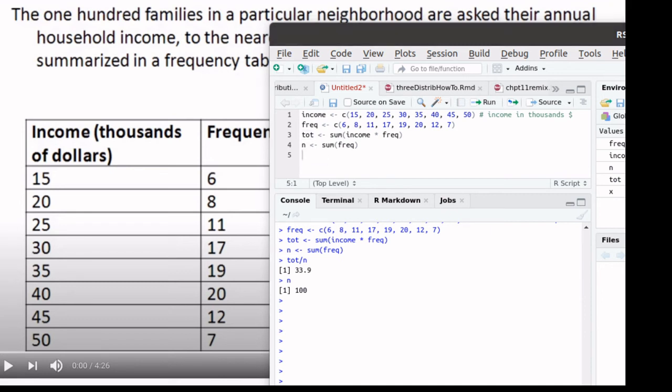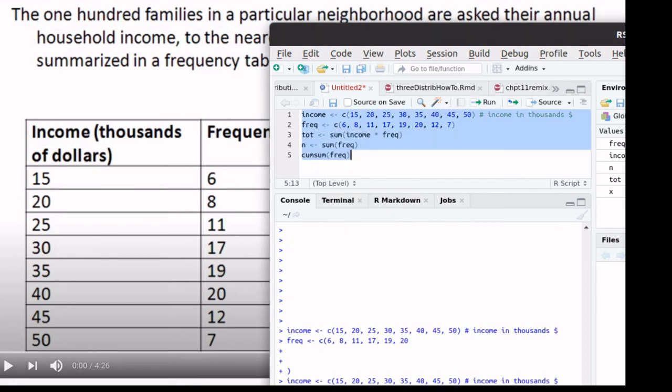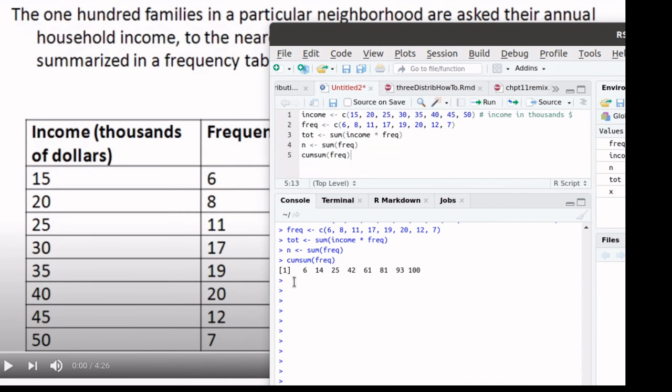Because R has a nice feature called cumulative sum. If we take the cumulative sum of frequency, let's run that script. And so now we can see the cumulative sum. It starts out with 6, 6 plus 8 is 14, 6 plus 8 plus 11 is 25, 6 plus 8 plus 11 plus 17 is 42. We haven't got to 50 yet, but then in this group is where we get to the 60s.